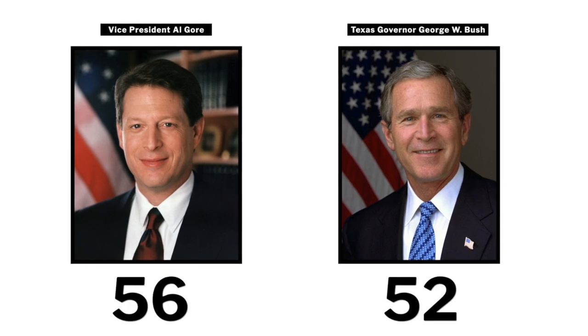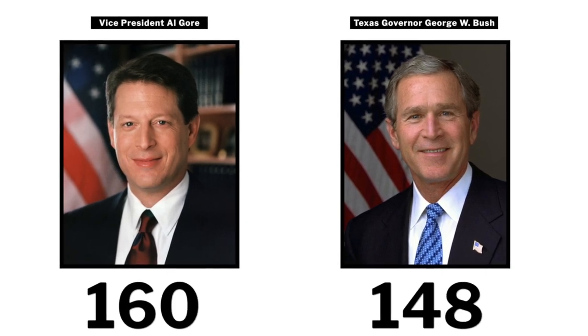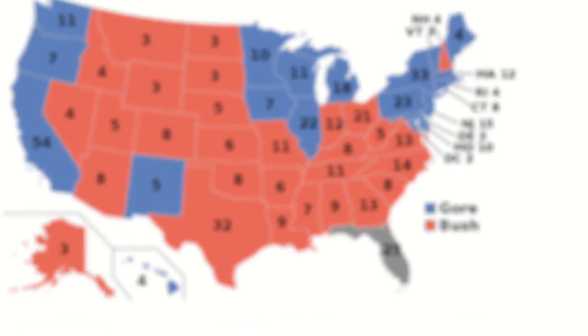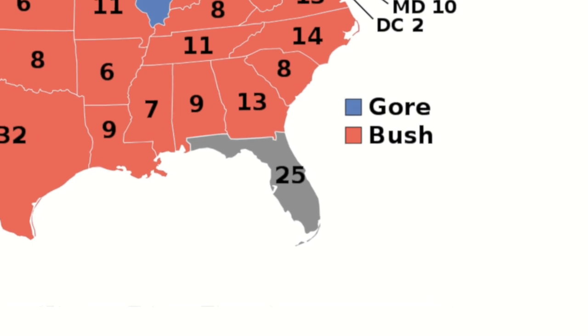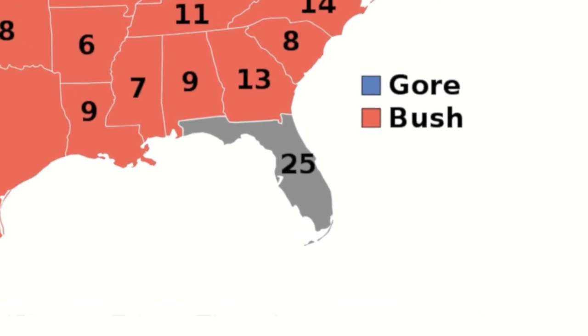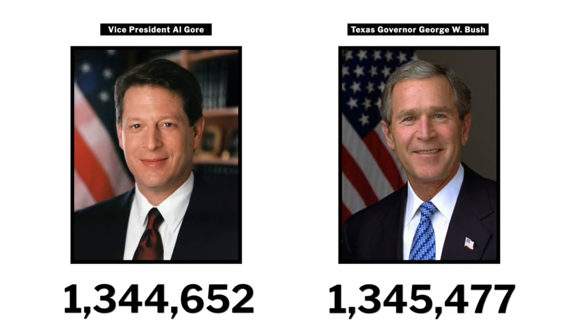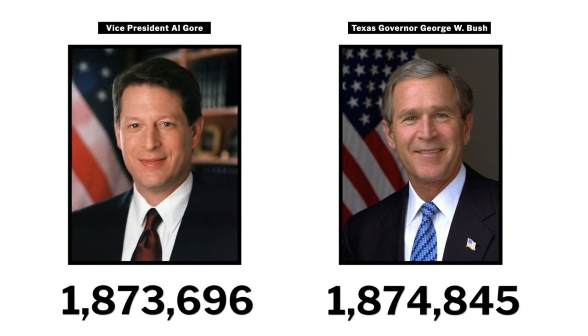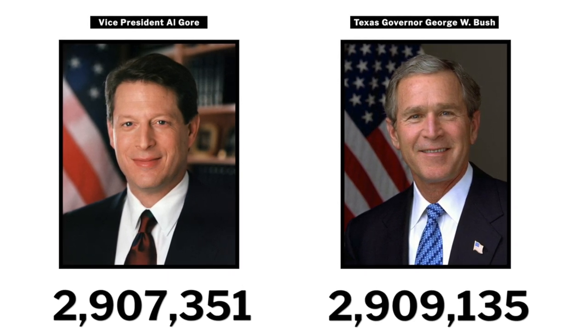On election night, Al Gore held a small electoral lead over George W. Bush before all the states' voting results were in. The election would come down to one state: Florida. Whoever won Florida's 25 electoral votes would become the next president. The vote was very close — too close to call. Out of nearly 6 million votes cast in the state, Bush was initially winning by a margin of only 1,784 votes.